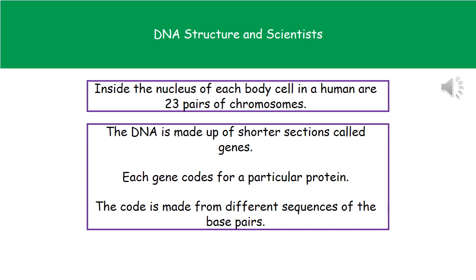What we actually find is when we look at that DNA, we can split it up into these shorter sections called genes. These genes are going to code for a particular protein. All of those base pairs we looked at previously, the sequence that they occur in that gene gives us the code for one particular protein. By changing the sequence of base pairs, we change the code, so we change the protein we make.